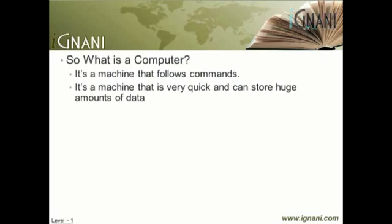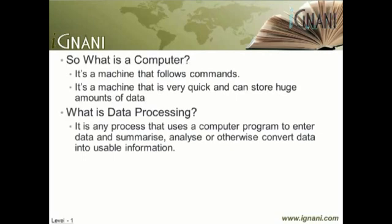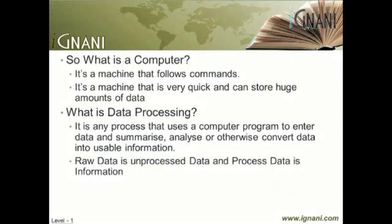Now we have another question: What is data processing? In computer terms, data processing is any process that uses a computer program to enter data and summarize, analyze, or otherwise convert data into usable information. Since data is most useful when well presented and informative, data processing systems are often referred to as information systems. To put it simply, raw data is unprocessed data, and processed data is information.